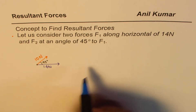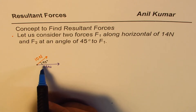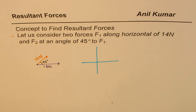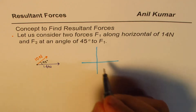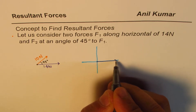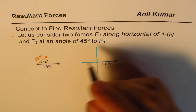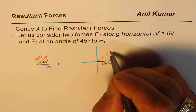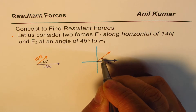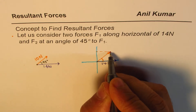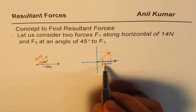Let's resolve these forces and find the resultant — both its magnitude and the direction with respect to the horizontal. I'll resolve these forces along the X and Y plane. The 14 Newton force is horizontal, so the whole force is along the X axis. The 10 Newton force at 45 degrees can be resolved into two components.